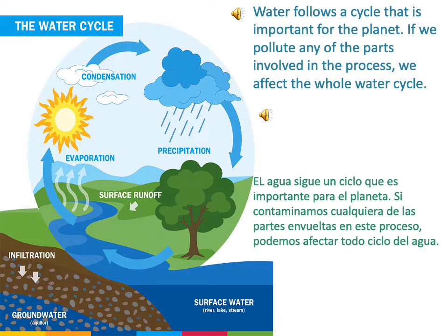The water cycle describes how water evaporates from the surface of the Earth, rises into the atmosphere, cools and condenses into rain or snow in clouds, and falls again to the surface as precipitation. The water falling on land collects in rivers and lakes, soil and porous layers of rock, and much of it flows back into the oceans, where it will once more evaporate.